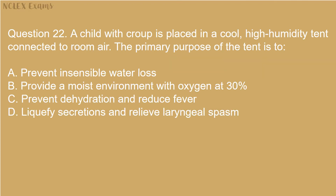Question 22: The child with croup is placed in a cool, high-humidity tent connected to room air. The primary purpose of the tent is to: A. prevent insensible water loss, B. provide a moist environment with oxygen at 30%, C. prevent dehydration and reduce fever, D. liquefy secretions and relieve laryngeal spasm.